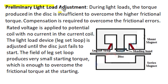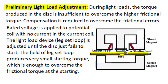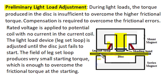During testing of an energy meter, the first stage is preliminary light load adjustment. At light load conditions, the torque produced in the disk is insufficient to overcome higher frictional torque, and the energy meter will read less than the actual energy passing through it. Compensation is required to overcome frictional errors. To adjust the frictional error compensation, rated voltage is applied to the potential coil while the current coil is left unexcited with no current in the load circuit.